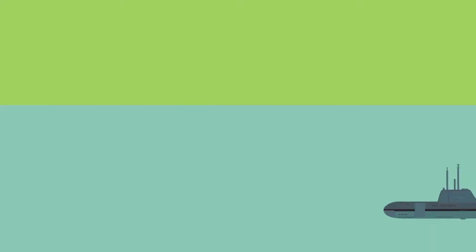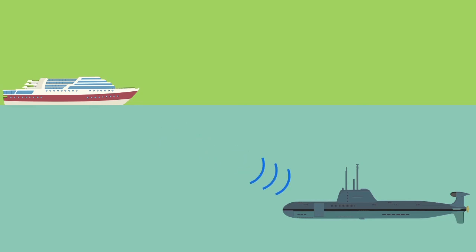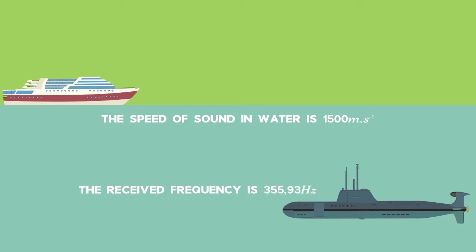This is a simple question. It's like the one we used in the previous lesson. The difference here is that the medium of the wave is water. A submarine receives a wave of frequency of 355.93 Hz. From information in the computer, the submarine knows that the source frequency is 350 Hz.